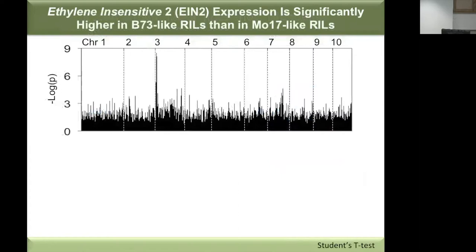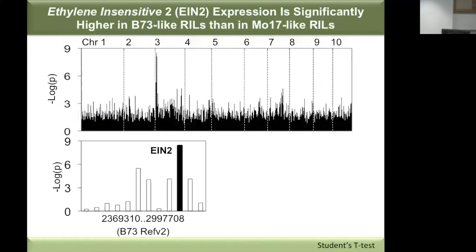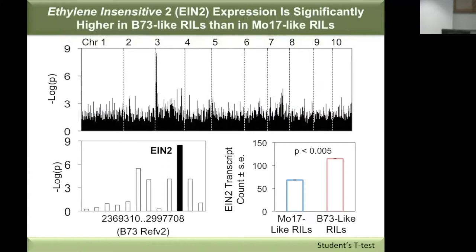If there's some gene causing this discrimination, its expression should be significantly different between the two phenotypic classes. I compared gene expression data between the two phenotypic classes across the entire genome, plotting the negative log of p-value from Student's t-test. The genes most significantly differentially expressed between these two phenotypic classes locate right within my QTL area. Zooming into the QTL area, the most differentially expressed gene is Ethylene Insensitive 2 (EIN2), an ethylene receptor that positively regulates ethylene signaling. RILs with a B73-like phenotype tend to express EIN2 at significantly higher levels, leading to the hypothesis that EIN2 expression and ethylene signaling is a positive regulator of the smilacide A to smilacide C transition.